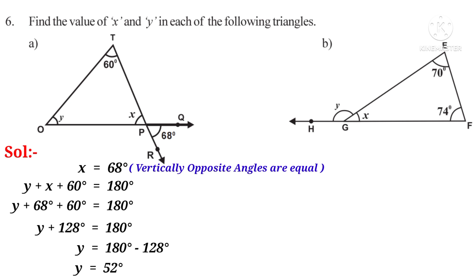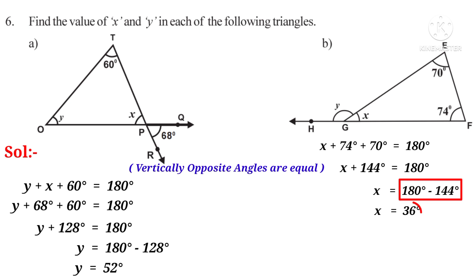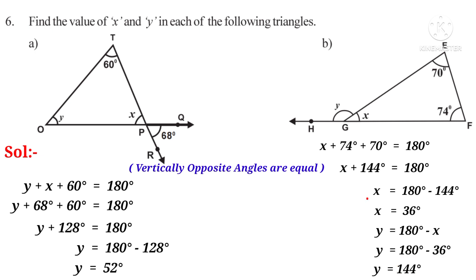In the second triangle EGF, X + 74° + 70° = 180°, so X + 144° = 180°, giving X = 36°. Since angles Y and X form a linear pair, Y = 180° − 36° = 144°. So X is 36 degrees and Y is 144 degrees.